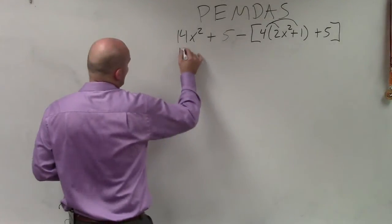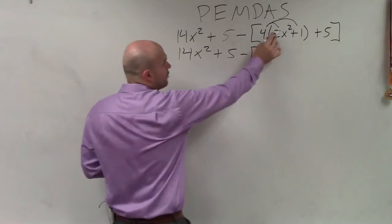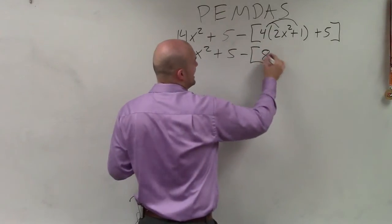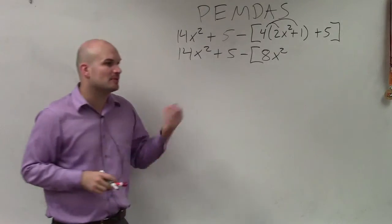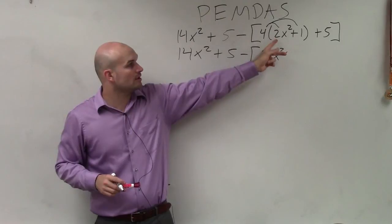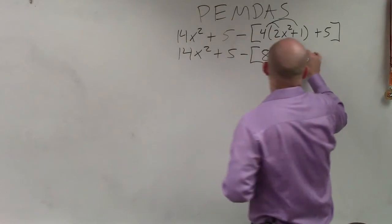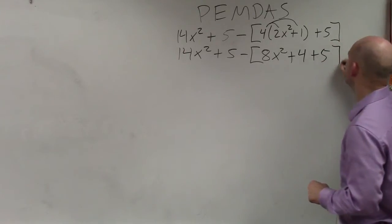Therefore, I'm going to rewrite the whole problem. 14x squared plus 5 minus 4 times 2x squared is going to be 8x squared. Again, remember, multiplying and dividing, you do not have to have like terms. You can just multiply the 4 times the 2, which will give you 8x squared. 4 times 1 is a positive 4 plus 5.